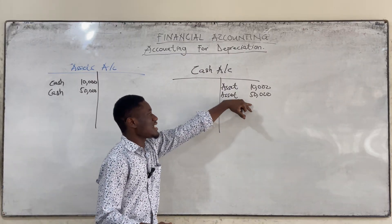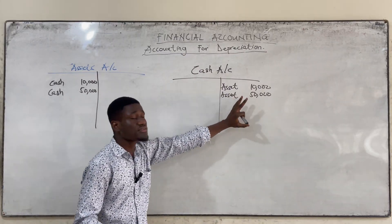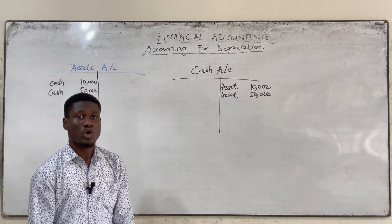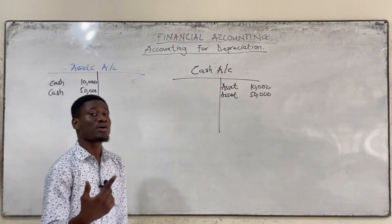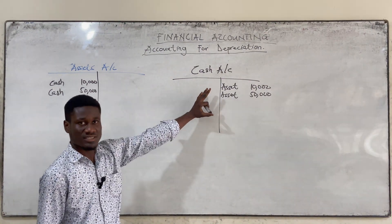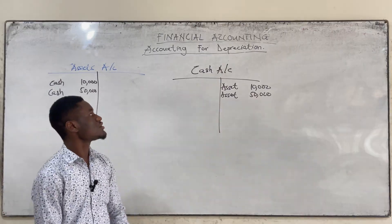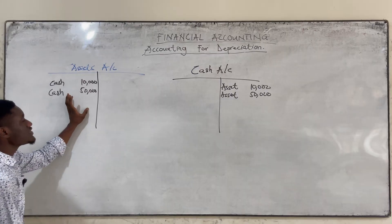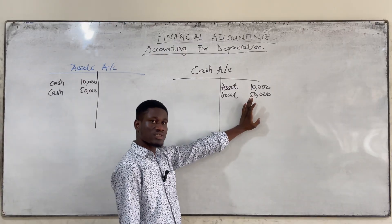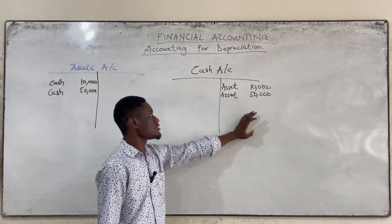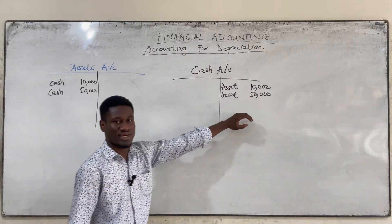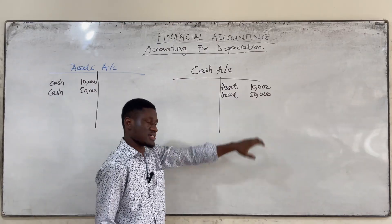Because there has been a decrease in our assets — cash is an asset — a decrease in assets means we credit the account. So whilst there has been an increase in one asset, there has been a decrease in another asset. Whilst debiting assets, we are going to credit cash.